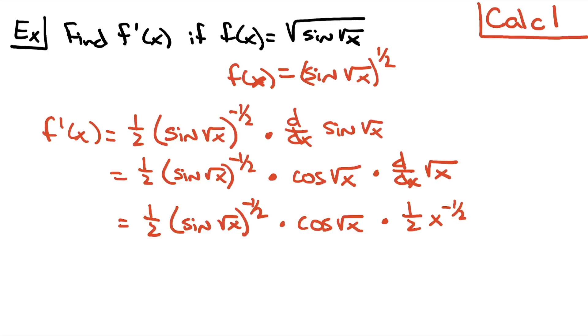The only thing that is going to remain in the numerator is going to be that cosine square root of x.